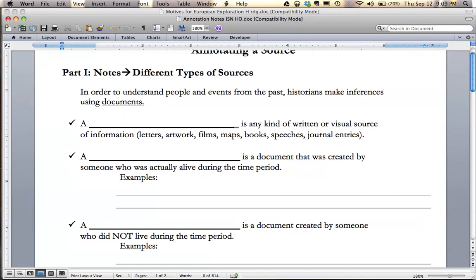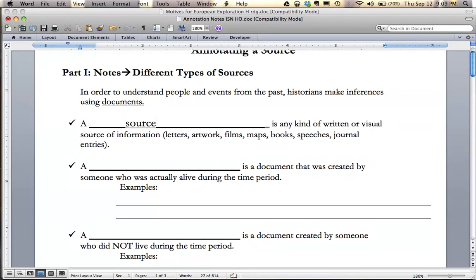Inferences, if you're not sure what that means, that means we try and figure out what it is based on what we know. An inference is information you can draw out. So the first one, a blank is any kind of written or visual source of information: letters, artwork, films, maps, books, speeches, journal entries. So the correct answer to this one is a source. A source is any kind of written or visual source of information.